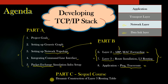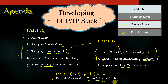Probably as a sequel to this course, we will implement the dynamic construction of the layer 3 routing table. In this part, we will see how routers of the topology interact with each other to populate their layer 3 routing table dynamically. This Part C of the course will be launched as a separate course and is not part of this course.